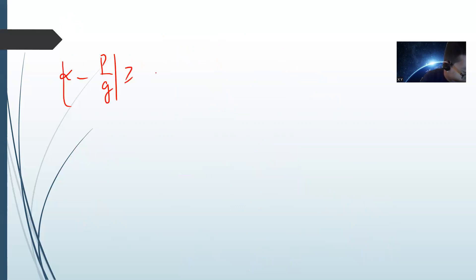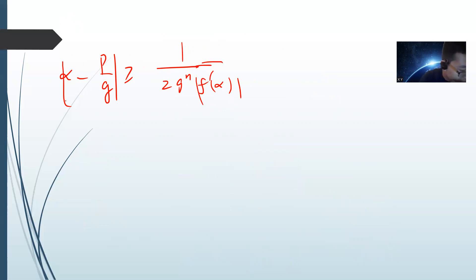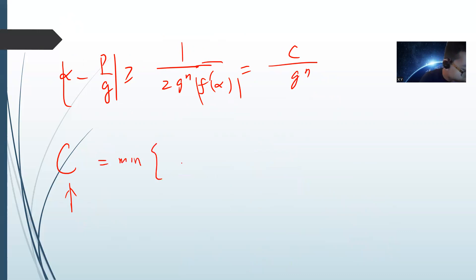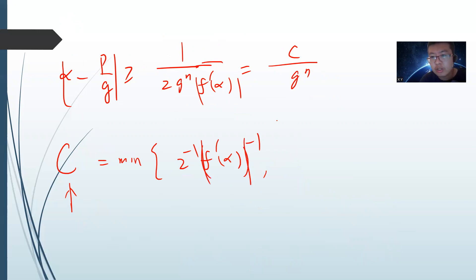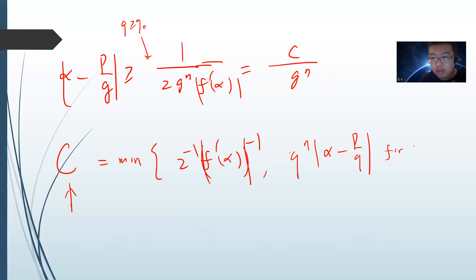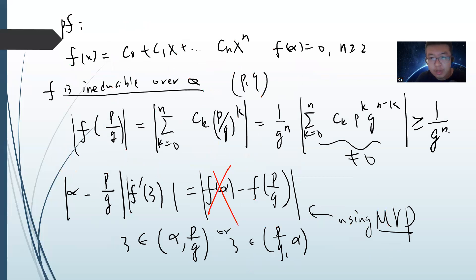Collecting our results: |α - p/q| ≥ 1 / (2 × q^n × |f'(α)|). We choose the constant c to be the minimum of 1/2 and 1/|f'(α)|, combined with all the finite cases for small q below some threshold q₀. So we just take the minimum over all q < q₀ of |α - p/q|, and the proof is complete. We just apply the mean value theorem and collect everything.